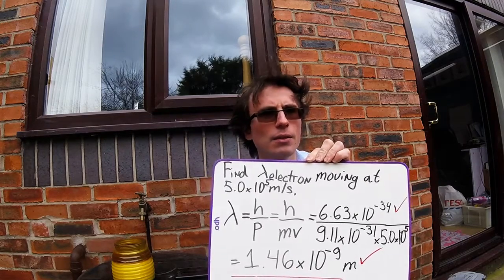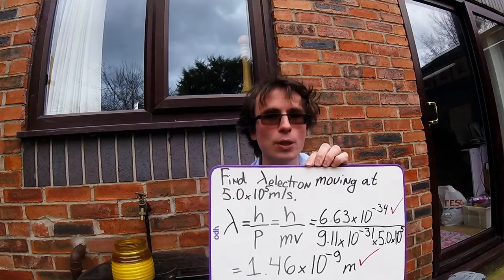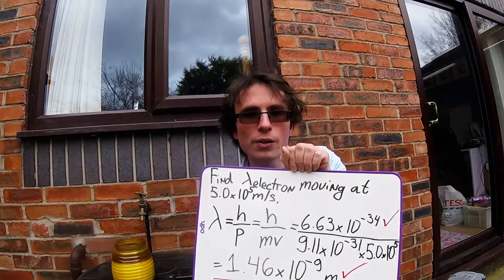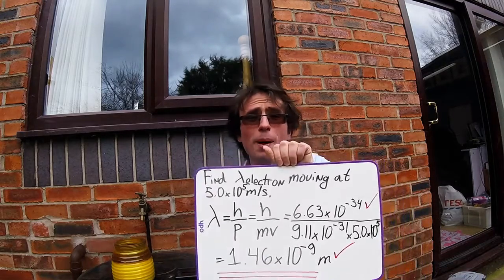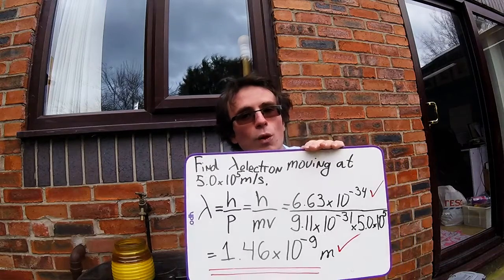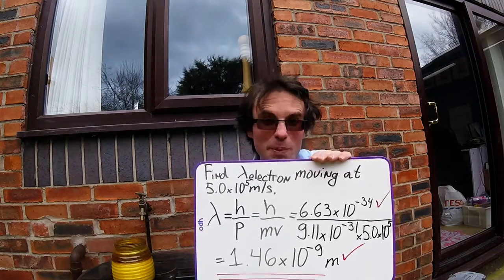Well, if that's the case, all we need to do is plug numbers into the equation. And we can see that this is going to be equal to Planck's constant, 6.63 times 10 to the power of minus 34, divided by the mass of an electron, 9.11 times 10 to the power of minus 31, times the speed.